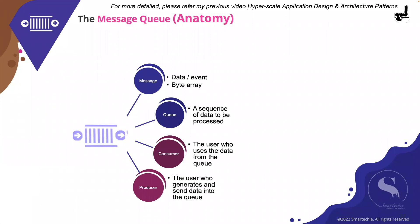The anatomy of any message queue has four different components: the message, the queue, the producer, and the consumer. The producer uses the queue to publish data or events, and the consumer uses the queue to read the event from the queue. Message queues increase the reliability of a system as they preserve processed data in case some part of the system goes offline, helping to keep the whole application live.